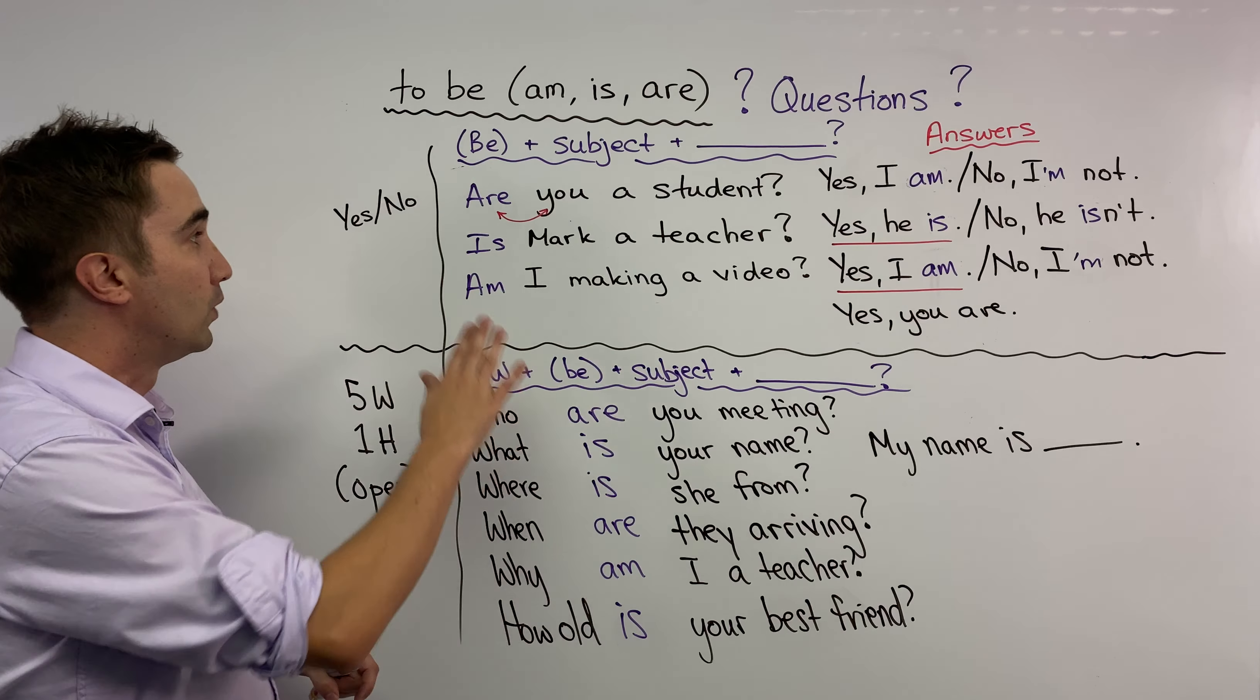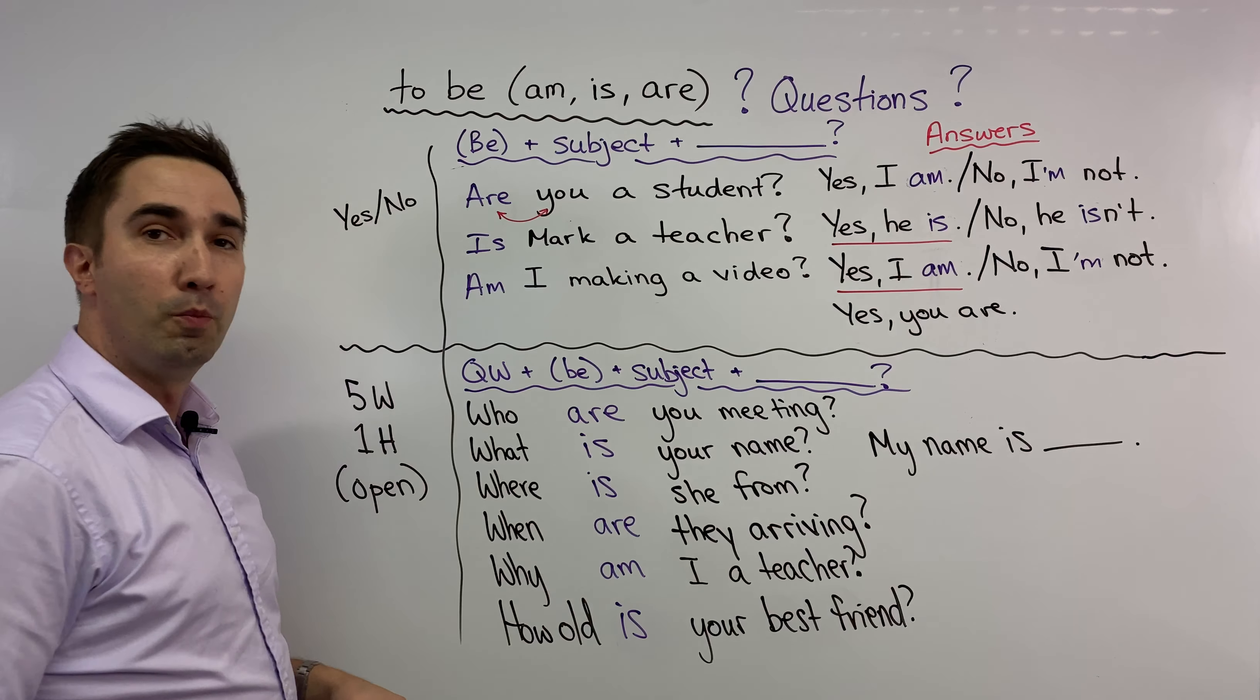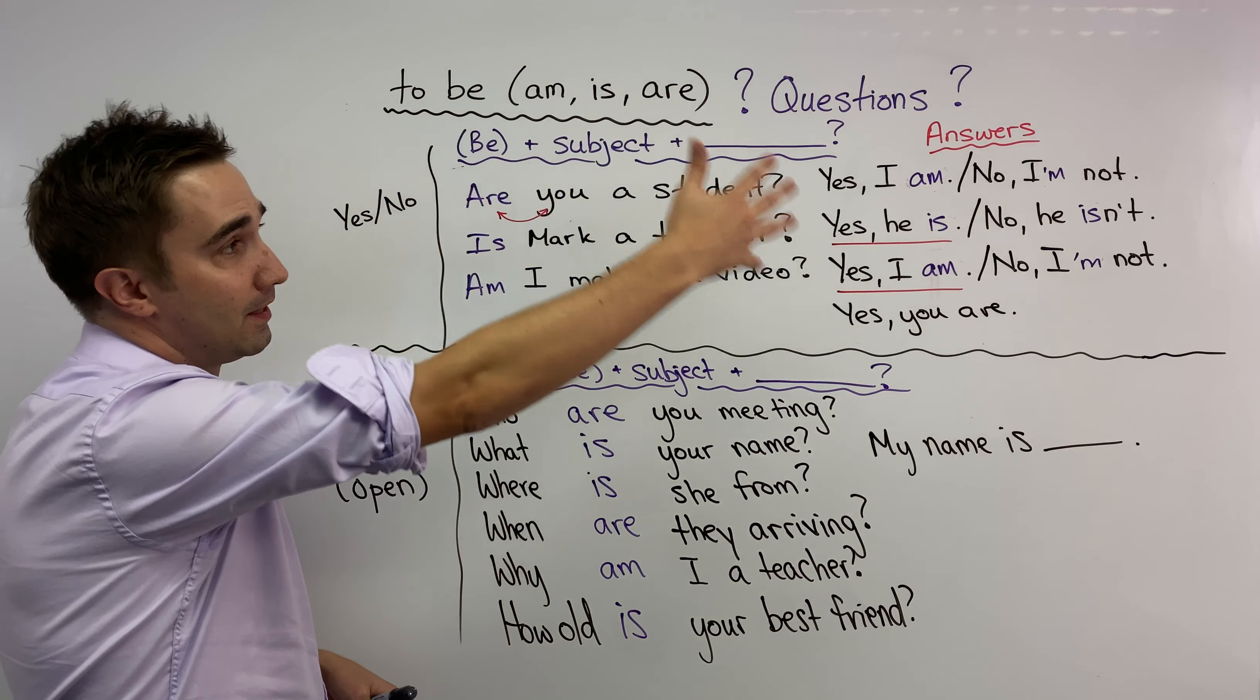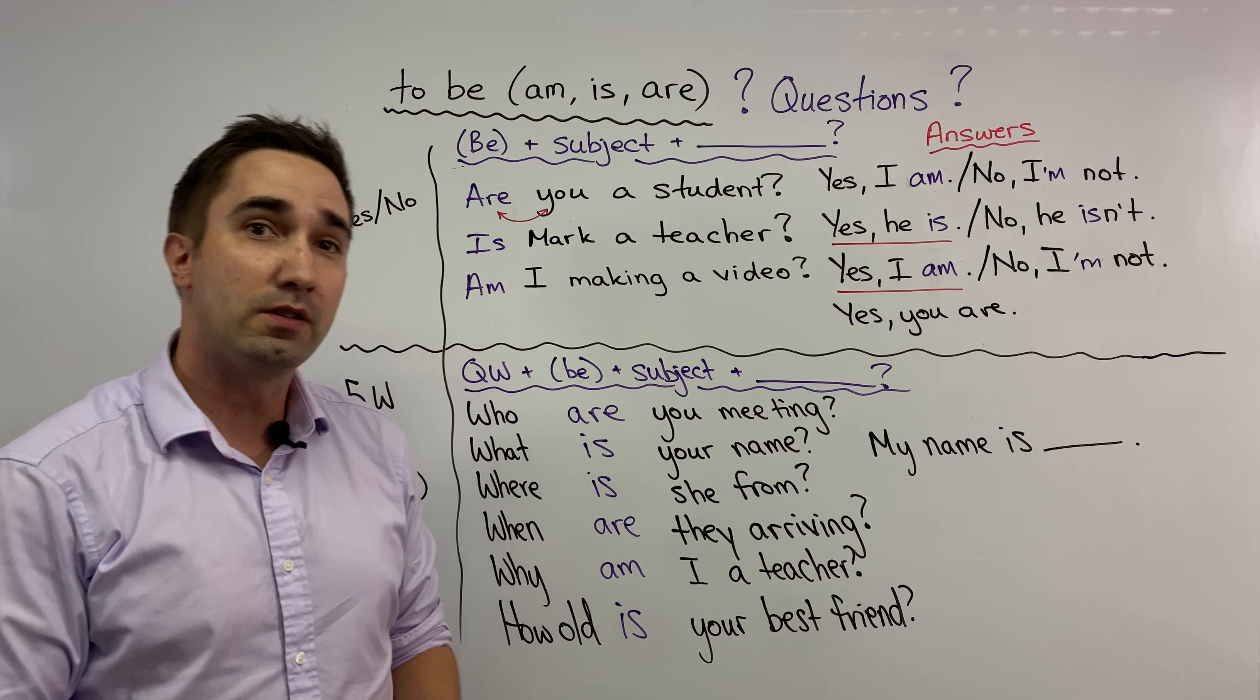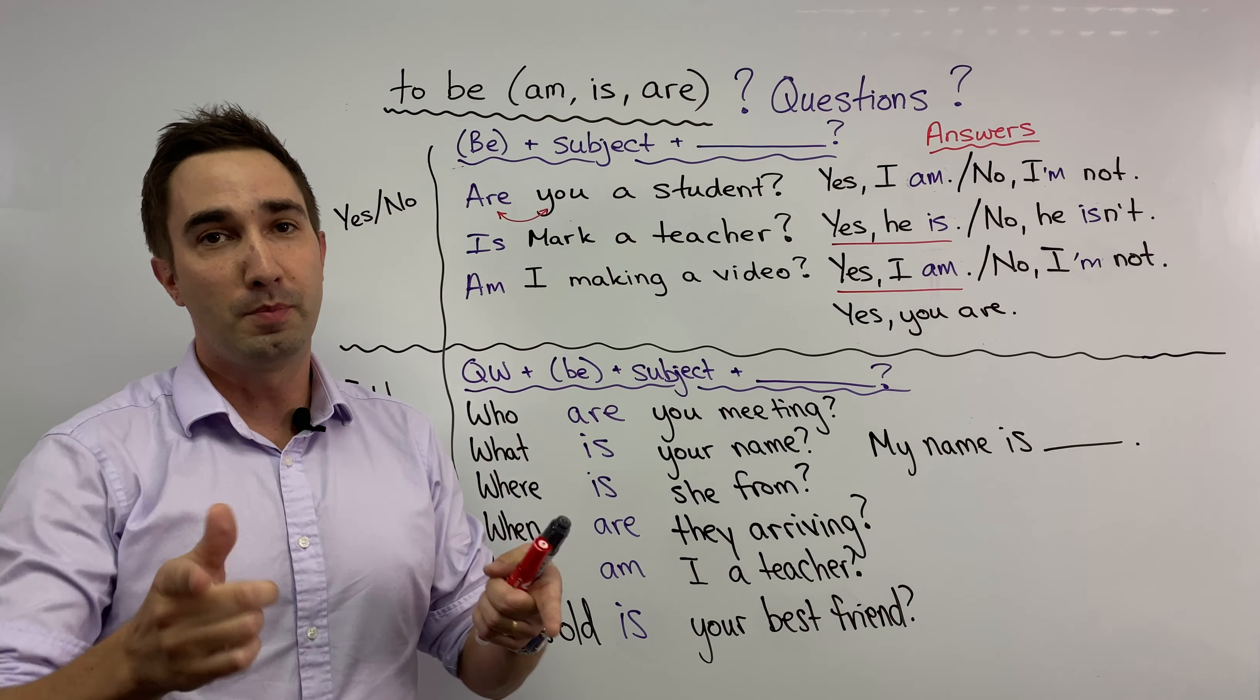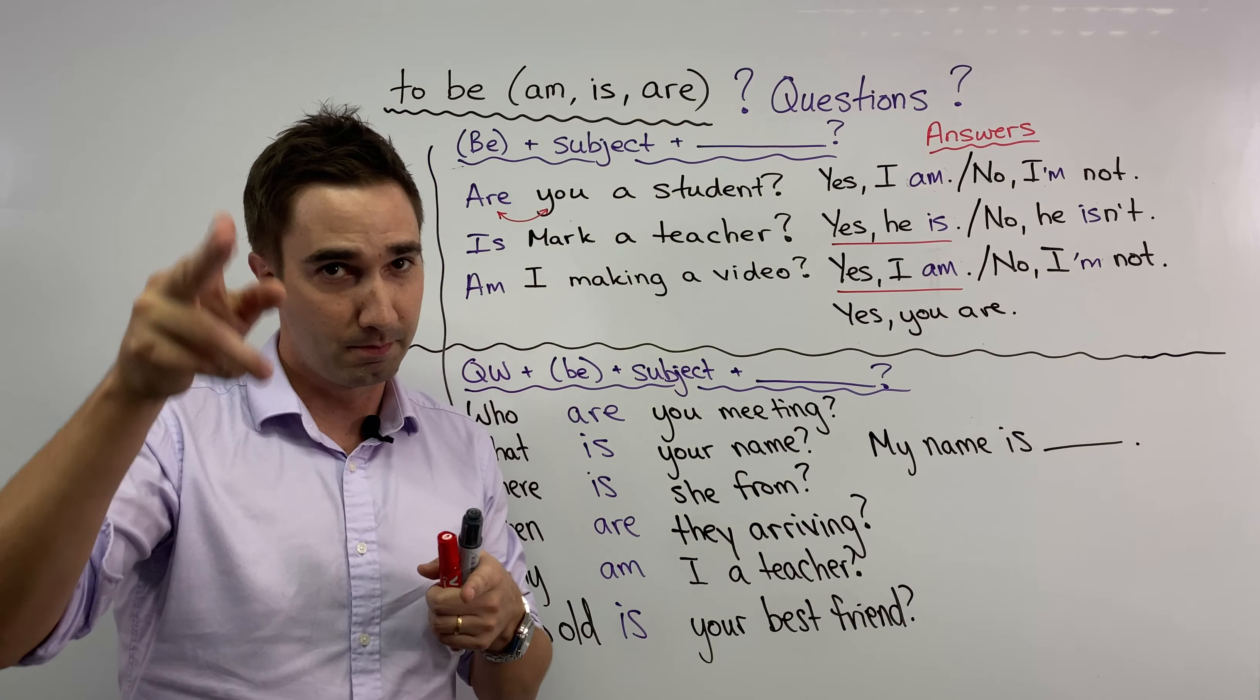So that's pretty much it. We have two types of questions, yes no question and open question. And these are some examples and ways you can ask those questions using the verb to be. So that's all. Thank you very much. Bye.